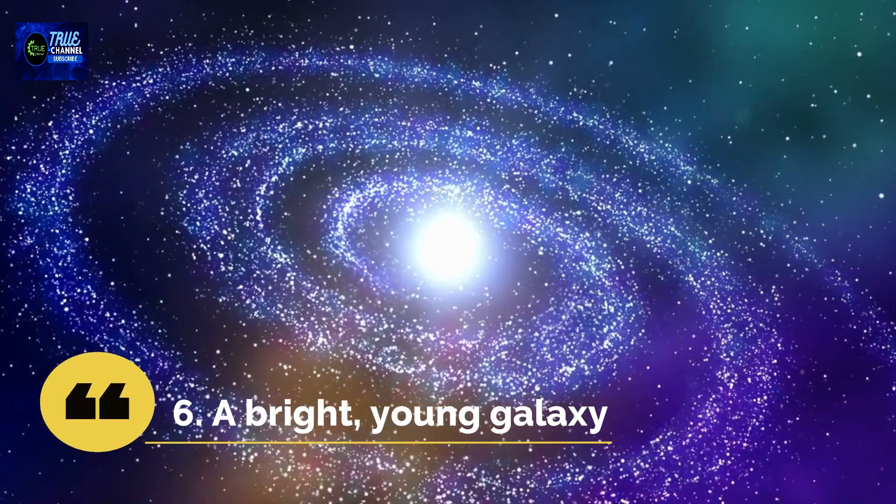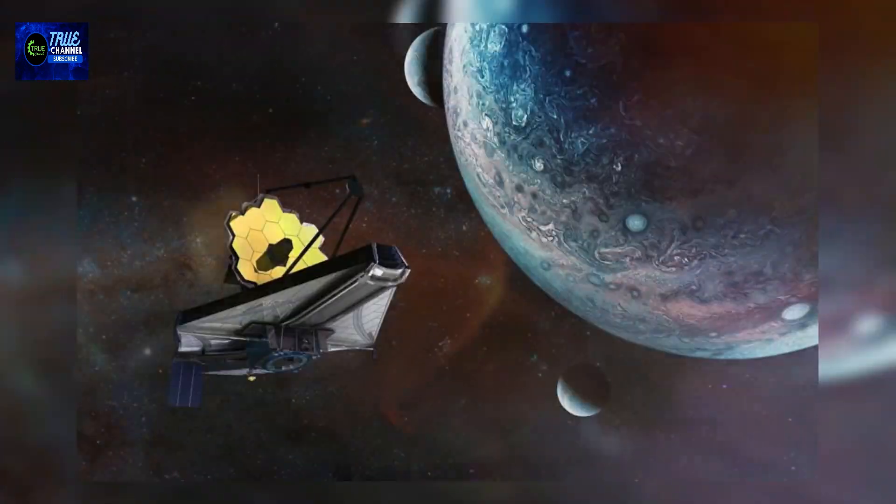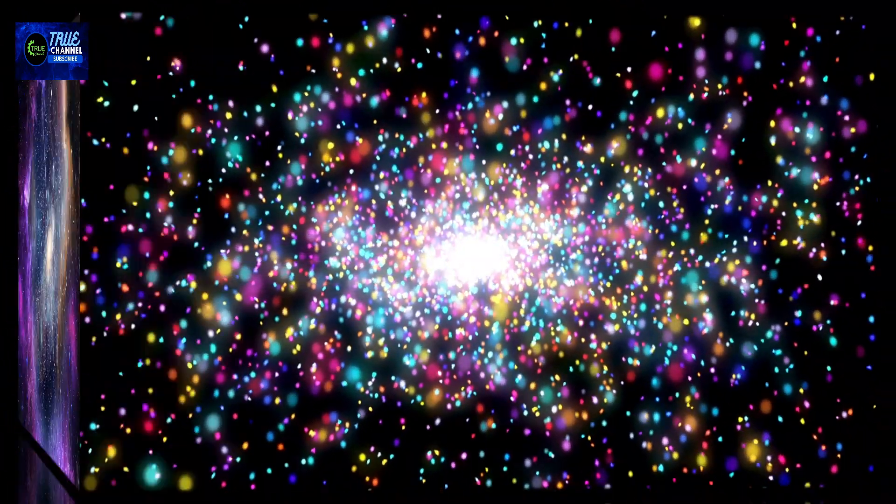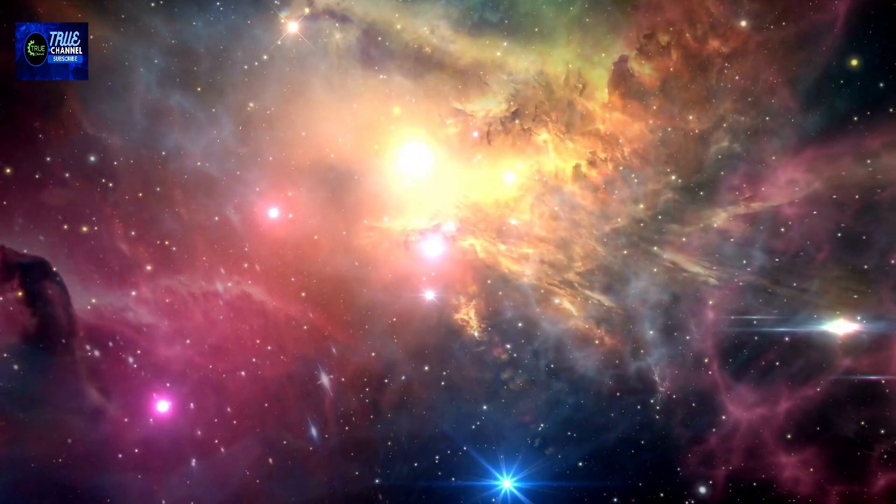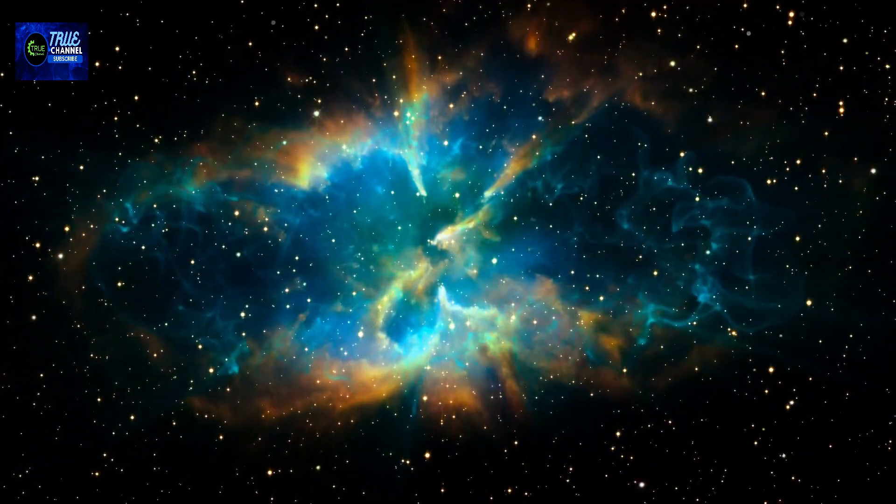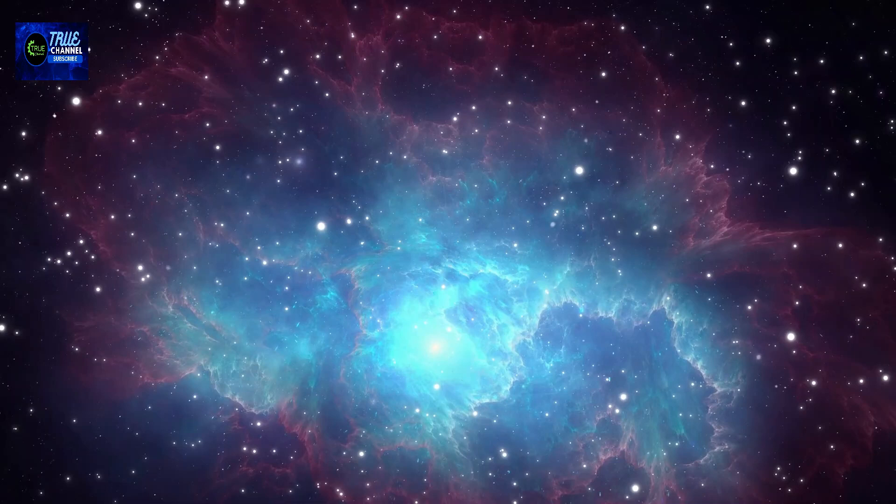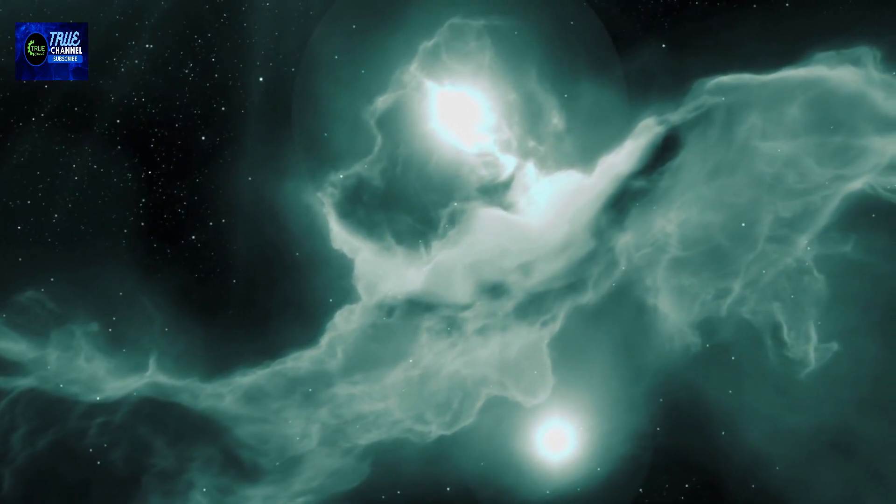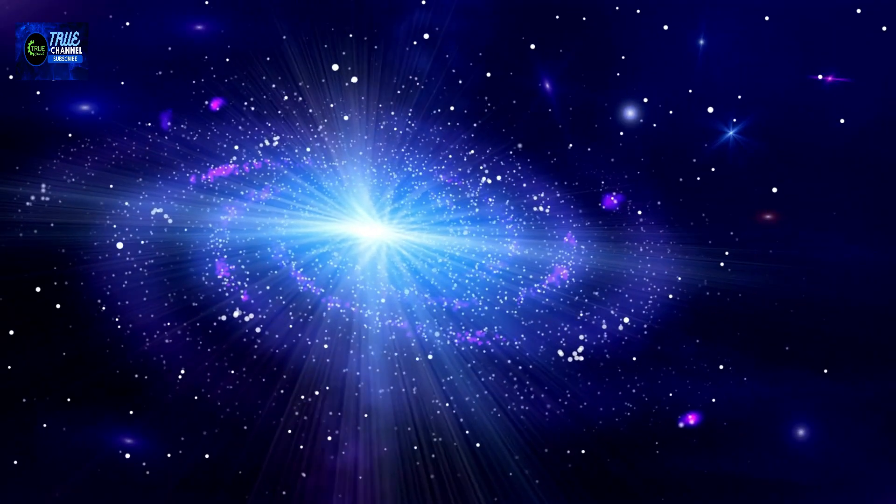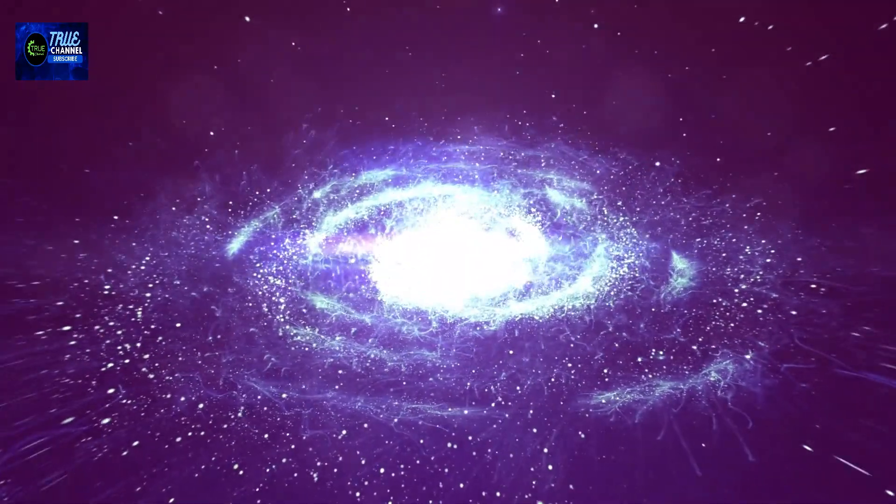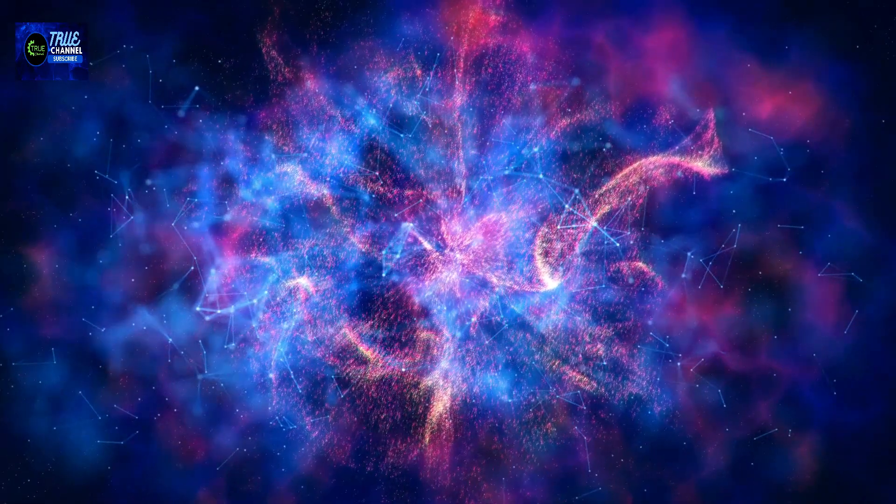Number 6: A Bright, Young Galaxy. When the James Webb Telescope turned its gaze towards the distant universe, it uncovered a bright, young galaxy that is still forming. This galaxy, located over 12 billion light-years away, appears very different from other galaxies in our local universe. The galaxy is full of stars that are just beginning to form, and it is surrounded by a giant cloud of gas and dust.